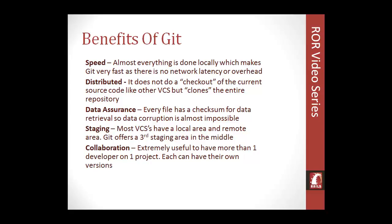Staging is another big feature. Most version control systems have just a local version and a version on the server. Git, however, has a staging area — a third area between the local and the remote. You can change something and send it to the staging area without actually committing it to the server. Once you know you're done editing your files, you can then choose to commit. The staging feature is actually completely optional — you can skip it by adding the -a flag on the Git commit command.